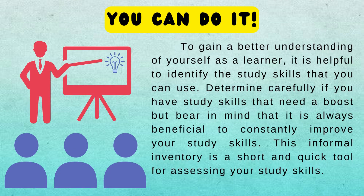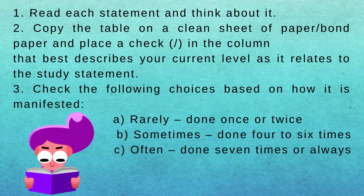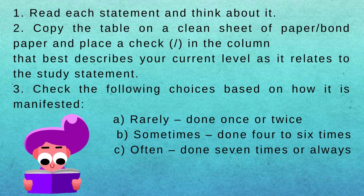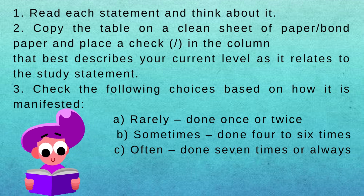Suggested Time Allotment: 20 minutes. To gain a better understanding of yourself as a learner, it is helpful to identify the study skills that you can use. Determine carefully if you have study skills that need a boost, but bear in mind that it is always beneficial to constantly improve your study skills. This informal inventory is a short and quick tool for assessing your study skills. Answer each question as honestly as you can. 1. Read each statement and think about it. 2. Copy the table on a clean sheet of paper or bond paper and place a check in the column that best describes your current level as it relates to the study statement. 3. Check the following choices based on how it is manifested: a. Rarely — done once or twice; b. Sometimes — done four to six times; c. Often — done seven times or always.